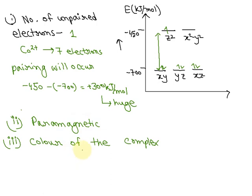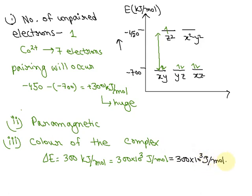Next we need to find out the color of the complex. The energy, ΔE, equals 300 kilojoules per mole, which is 300 × 10³ joules per mole. Dividing 300 × 10³ joules per mole by 6.023 × 10²³ per mole, the moles cancel out, giving 49.80 × 10⁻²⁰ joules.